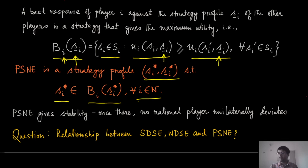PSNE essentially gives you stability. It is not telling you how you get there, but once you are at S_i*, S_{-i}*, no rational player has any reason to unilaterally deviate from that position. So it is some sort of a self-enforcing agreement among all the players, and we can consider it to be a reasonable outcome of this game — it is an equilibrium point.